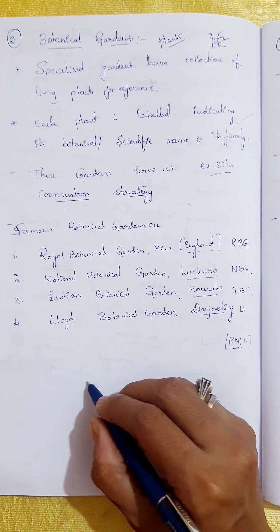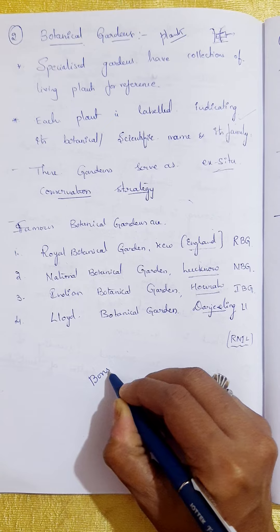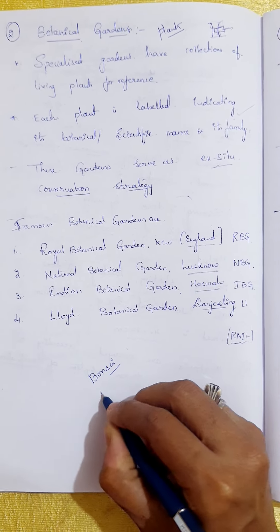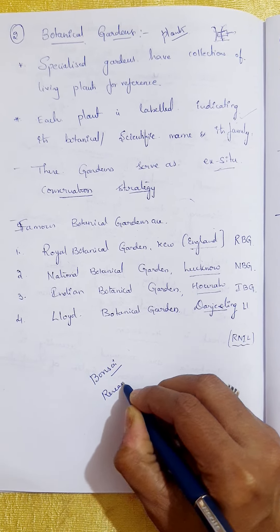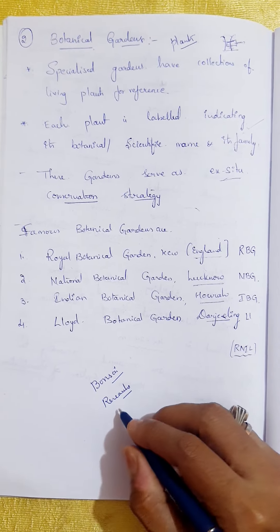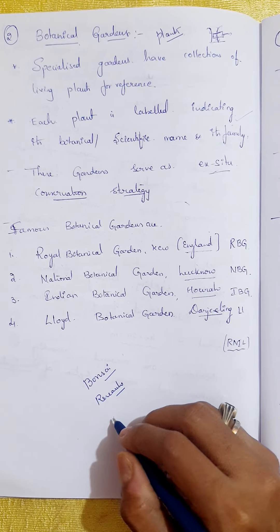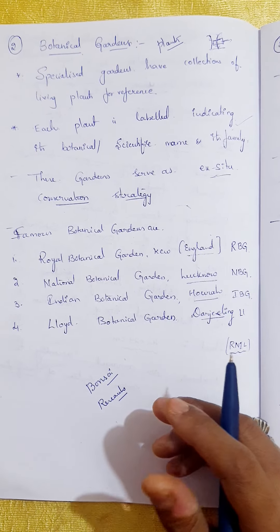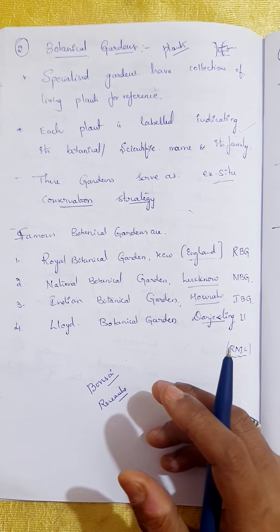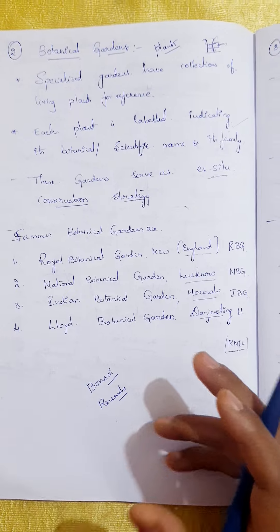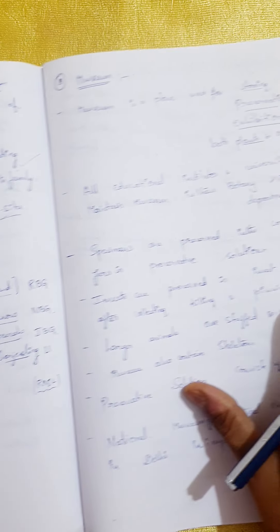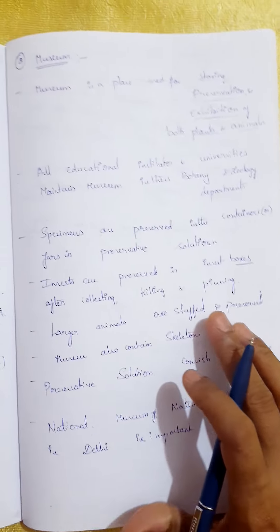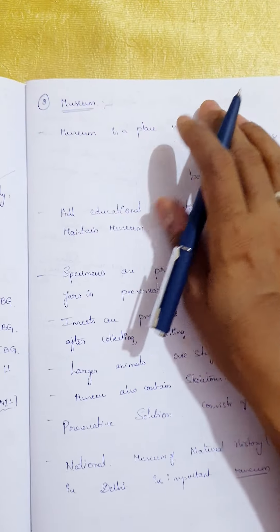These botanical gardens also contain bonsai plants and provide research centers where you can gain scientific knowledge. You also get more oxygen when you visit, because many beautiful flowering plants are present. Next, we will see another taxonomical aid called a museum.